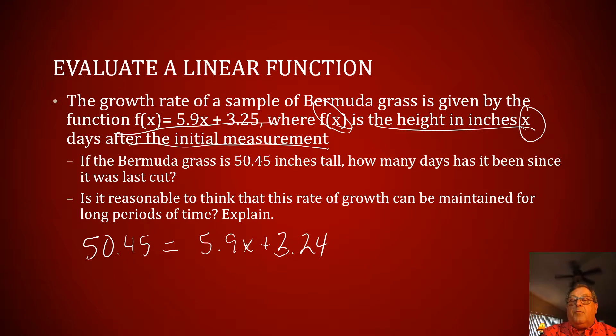And x is the number of days, and that's what we're trying to find. How many days? Let's subtract 3.25 from both sides of this equation. And when we do, 50.45 minus 3.25 that would give us 47.2.